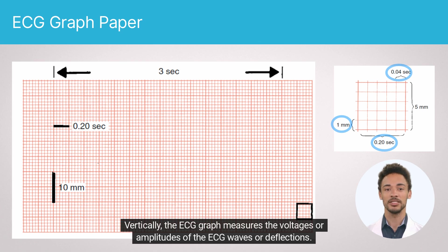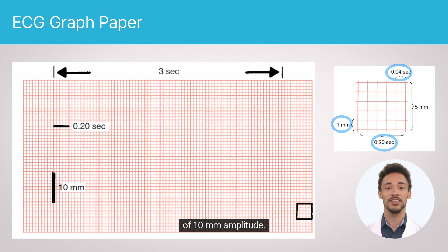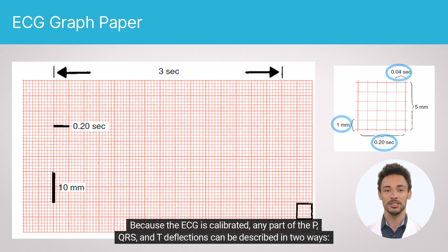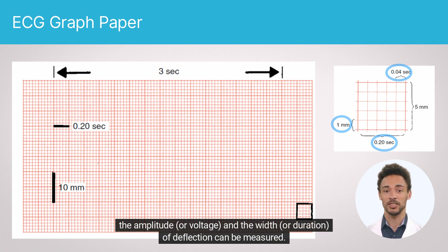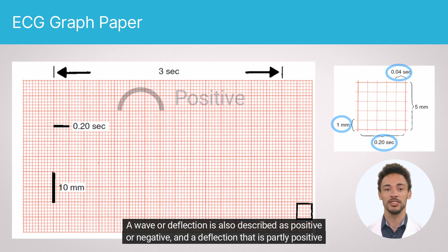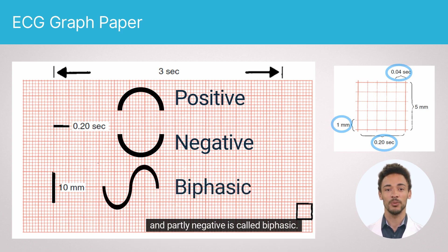Vertically, the ECG graph measures the voltages or amplitudes of the ECG waves or deflections. The electrocardiograph is standardized or calibrated so that a 1 mV signal produces a deflection of 10 mm amplitude. The standardization can be set at one-half or two times the usual calibration. Because the ECG is calibrated, any part of the P-Q-R-S and T deflections can be described by its amplitude or voltage, and its width or duration. A deflection is also described as positive or negative, and a deflection that is partly positive and partly negative is called biphasic.